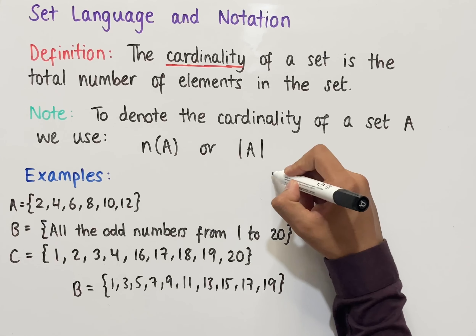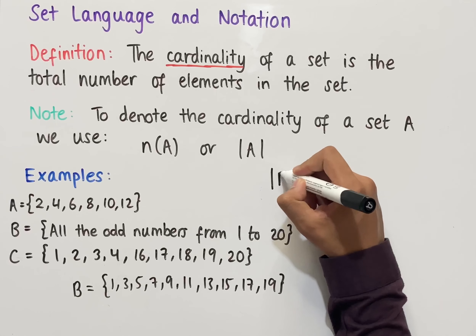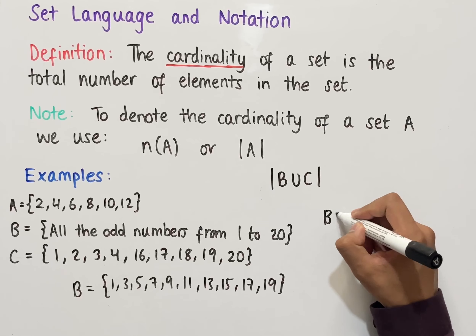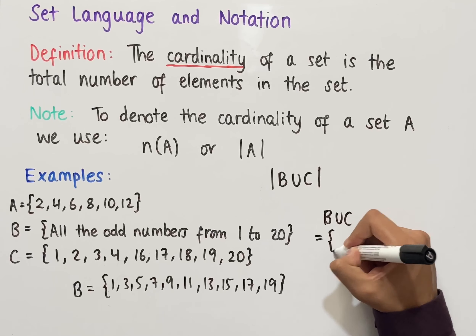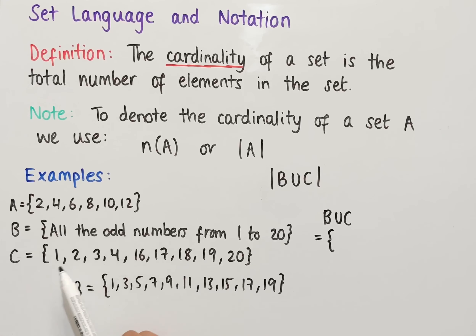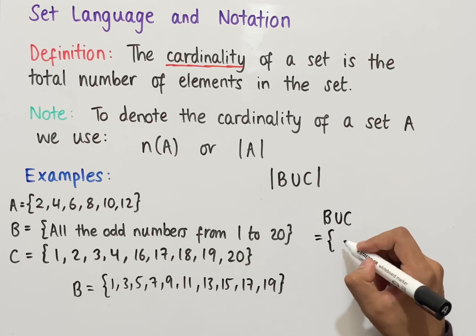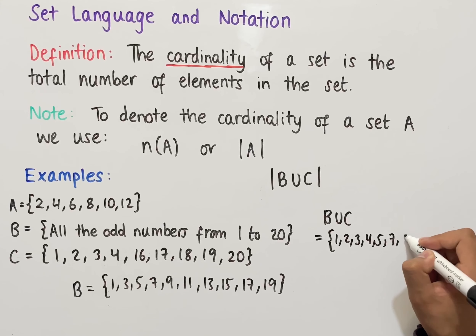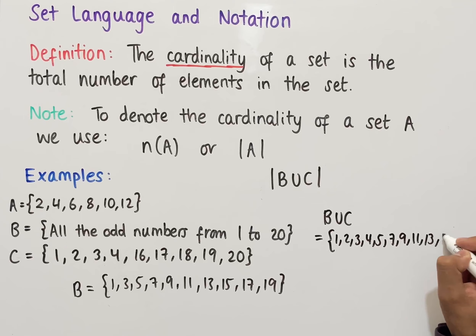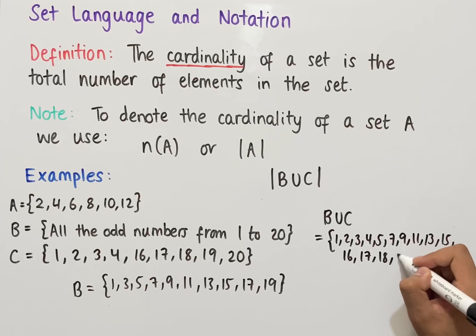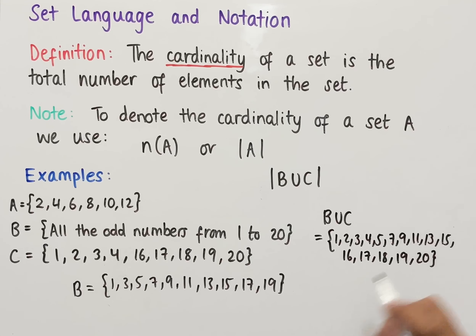We could also use union, so let's work out the cardinality of B union C. First, we need to work out what B union C is as a set. B union C includes all elements that are in either B, C, or both. Combining all elements together, B union C equals 1, 2, 3, 4, 5, 7, 9, 11, 13, 15, 16, 17, 18, 19, and 20.